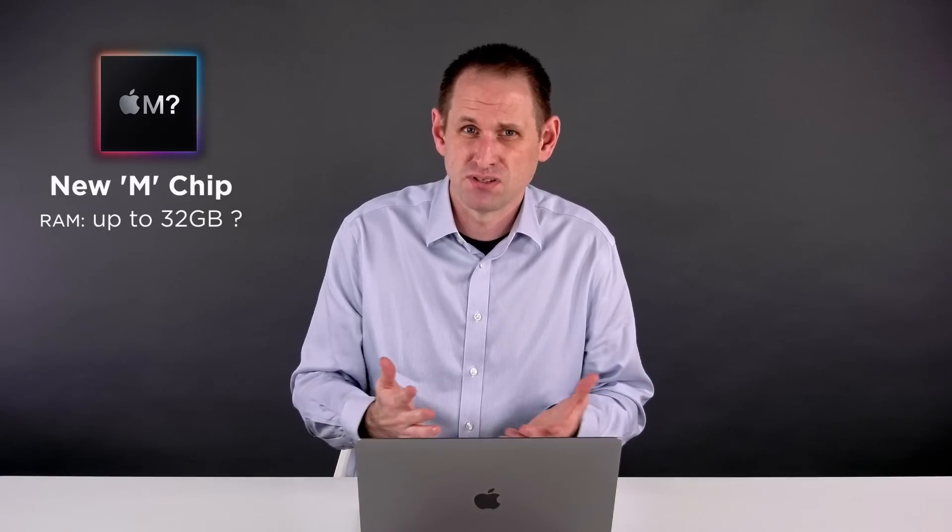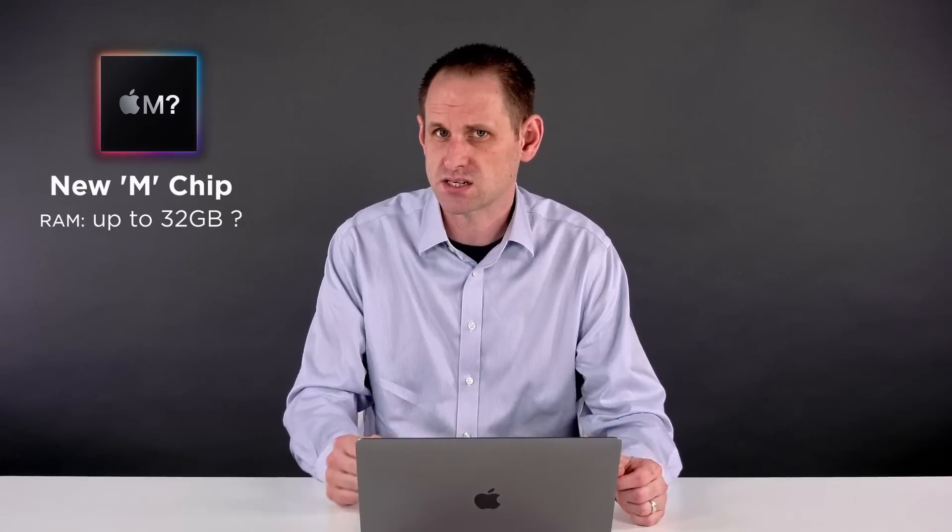The M1 machines do amazing things considering the amount of RAM they have. In traditional x86 terms, it seems almost magical. But they can't change the laws of computing physics, and there are tasks where more RAM would be greatly appreciated. So we could have a situation where we've got the M1 Macs with their 8 gig and 16 gig options. And the updated M chip might offer 16 gig and 32 gig options.